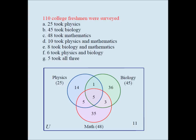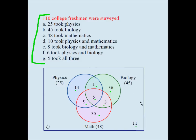Before we move on, let's make sure we are clear about one thing. Whenever you have a three-set Venn diagram, you will have eight unique, distinct, non-overlapping regions. You want to make sure you fill in all eight regions based on your given conditions. Three circles will overlap and create eight regions, and you have to make sure you fill in all eight.